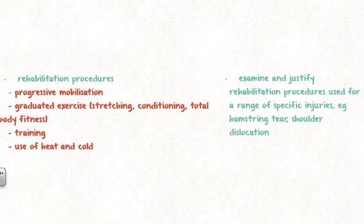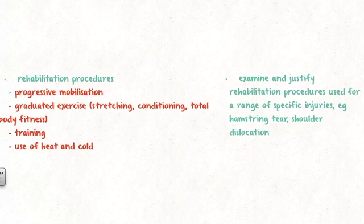They are highlighted in red: progressive mobilisation, graduated exercise which is a three-step process, training, and the use of heat and cold. The right-hand side of the syllabus says that you have to be able to examine or justify rehabilitation procedures used for a range of specific injuries.